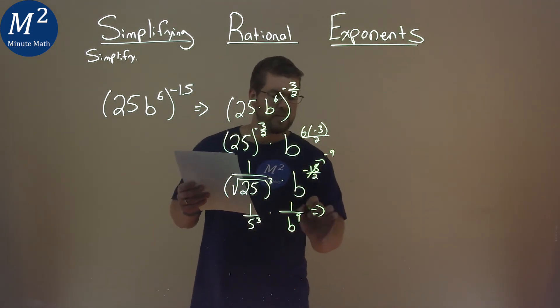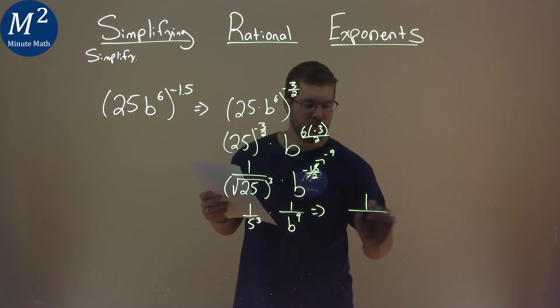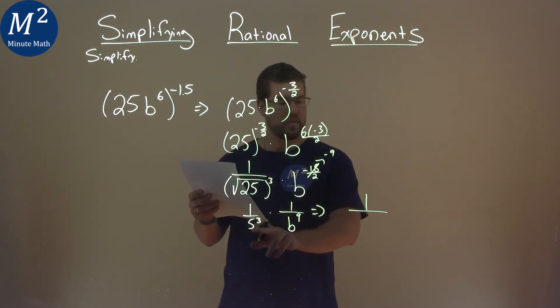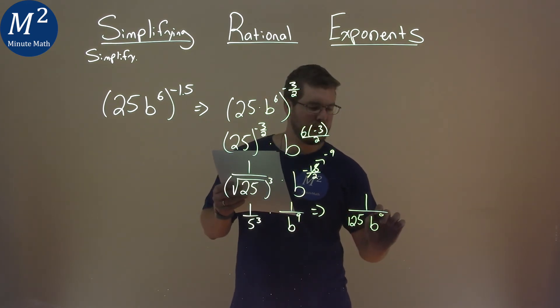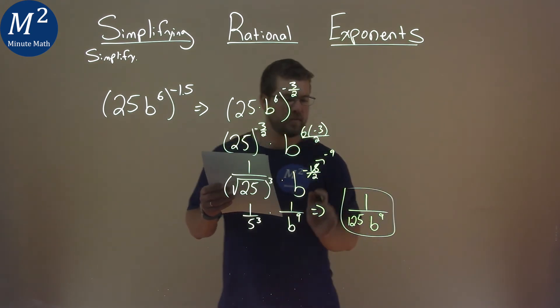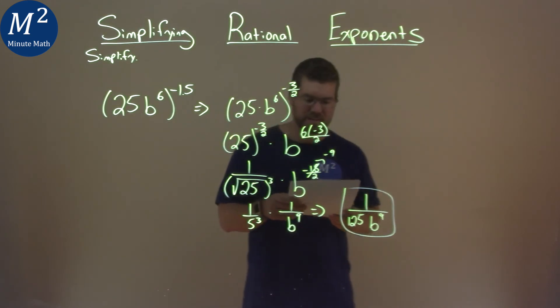All right, lastly, let's multiply all this out. We have 1 over all one big thing multiplied out. 5 to the 3rd power is 125, and then we just have b to the 9th power. And so my final answer here is 1 over 125b to the 9th power.